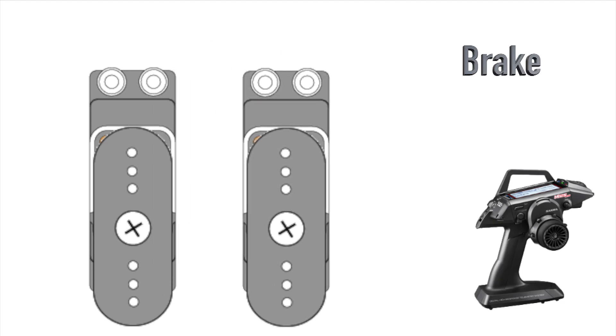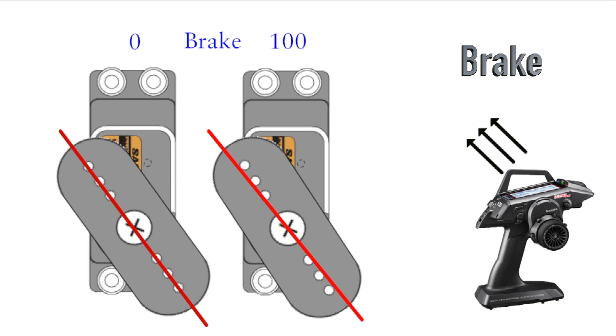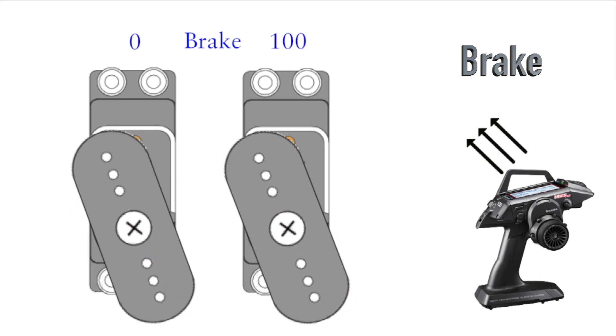For brake setting, the red line is the objective point when you turn steering. When the servo is close to the objective point, the right one becomes slow to stop.